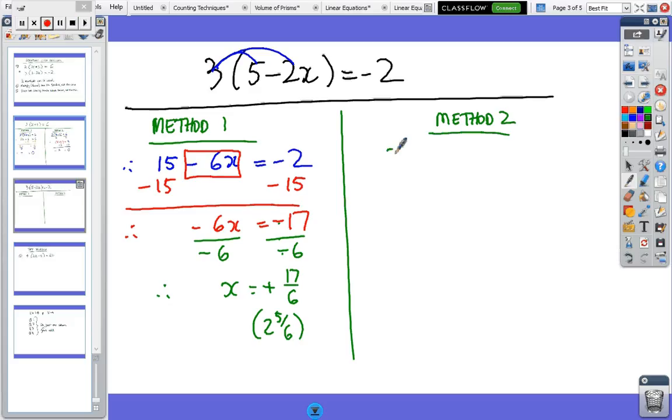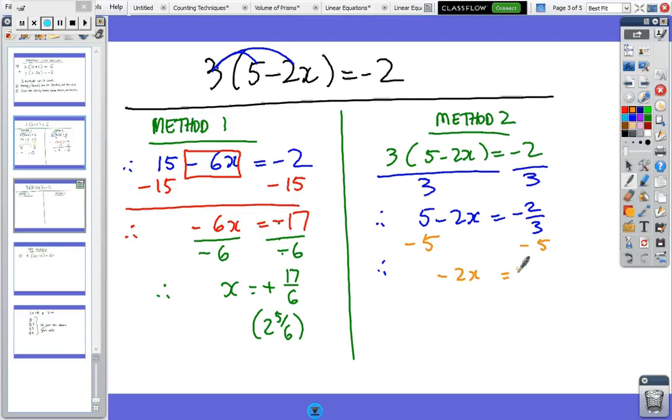Method 2, I'll just write out the question again. In method 2 you divide both sides by 3 and the trouble is now you've already got a fraction. Then we subtract 5 from both sides. Those cancel out so we end up with minus 2x. Those two numbers add up to minus 5 and 2/3. Then divide by minus 2, and so x equals, now you just put that in the calculator using your fraction button and the answer is still 17 on 6.